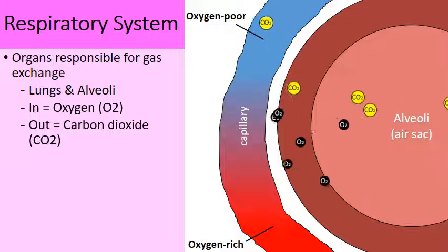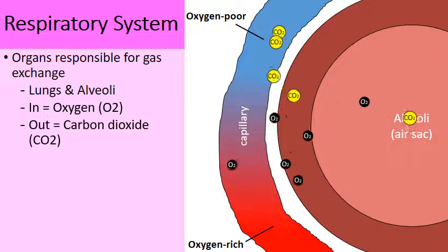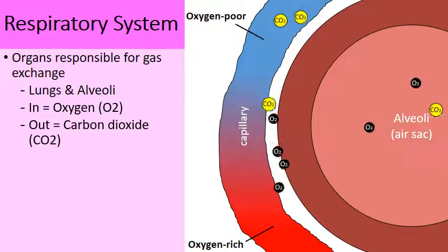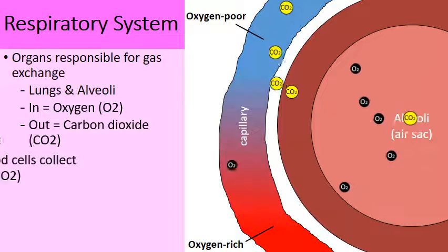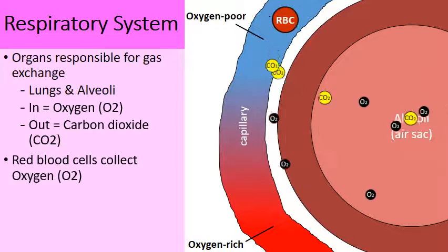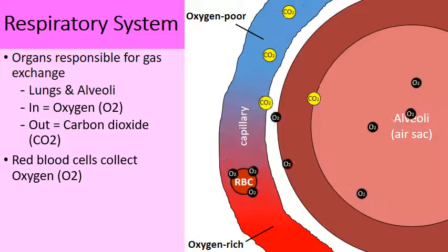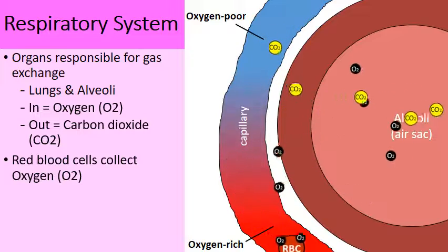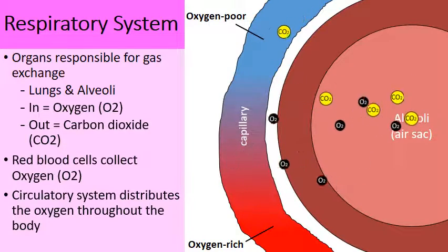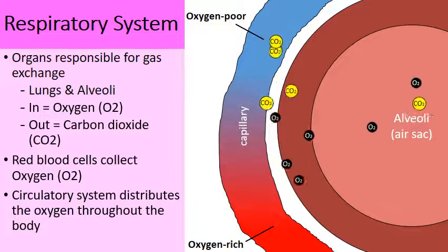Carbon dioxide is removed from the capillary into the alveoli. When a red blood cell comes along, it will pick up some of the oxygen, and that oxygen is then distributed through your body because of the actions of your circulatory system.